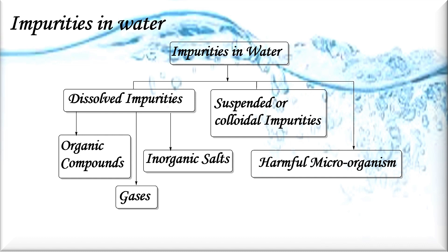Dissolved gases come generally from industries, such as carbon dioxide, H₂S, ammonia, oxides of nitrogen, and sulfur dioxide. The next type is suspended or colloidal impurities, for example sand, clay, and lime. These are present in water in suspension; heavy particles settle down after standing, while smaller particles remain as colloidal particles. There are also harmful microorganisms — various pathogenic microorganisms like bacteria and viruses also enter water through waste and sewage, and these are the major causes of various diseases.